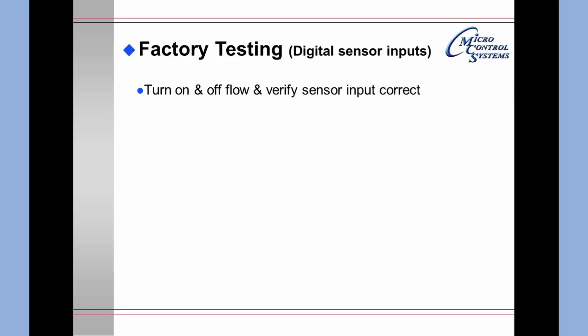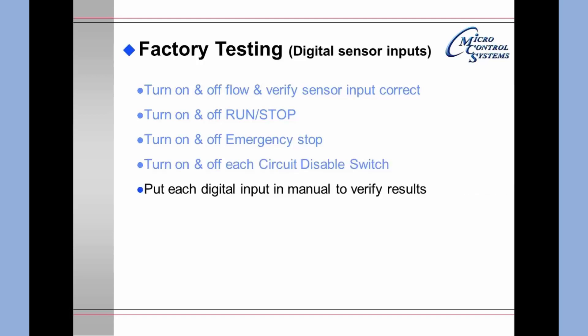For digital sensor inputs, you will turn on and off the flow and verify that the sensor input is correct. You will turn on and off the run stop switch and verify that it is correct. You will turn on and off the emergency stop switch and verify that it responds correctly. You will turn on and off each circuit disable switch and verify that the correct circuit shows up as disabled or shut down. Then put each digital input in manual to verify the results.